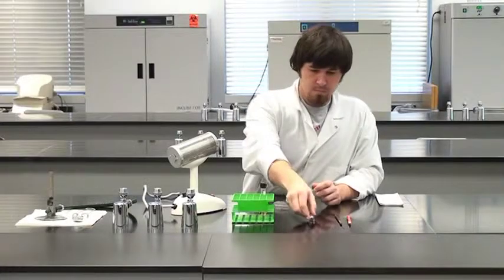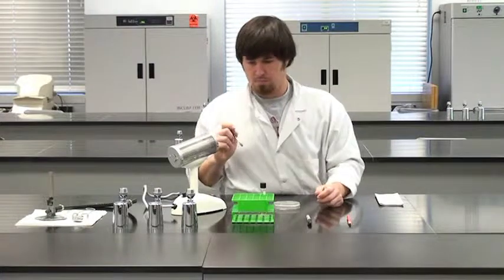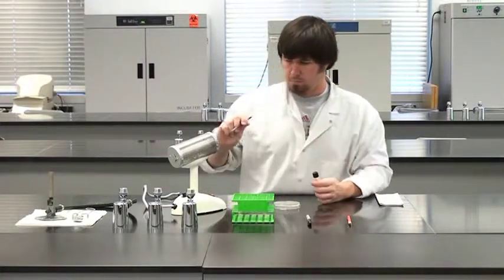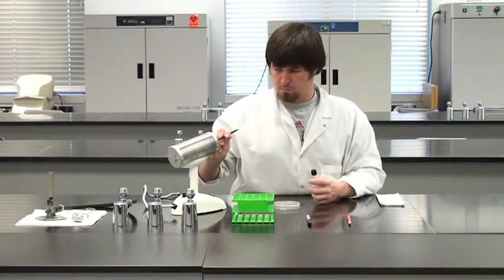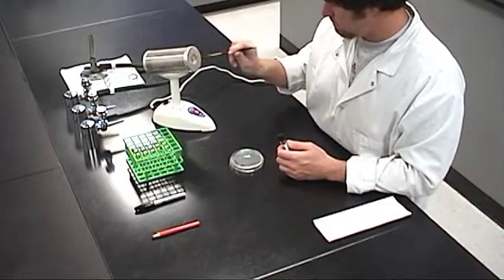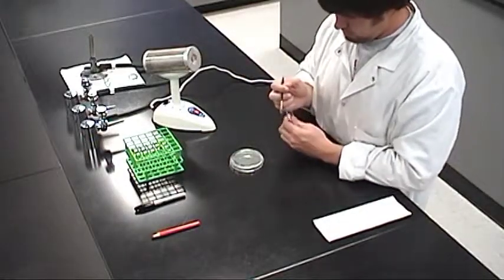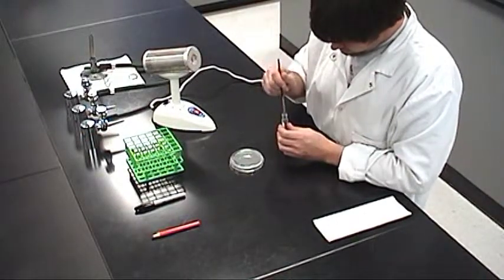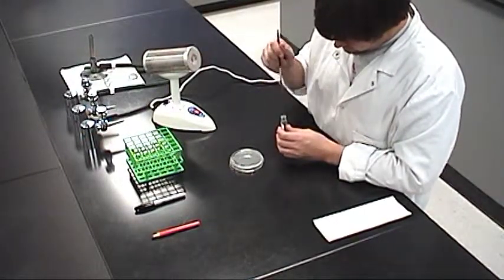Next, inoculate the streak plate using an inoculating loop. Flame the loop for at least 5 seconds to sterilize it. Then extract a single loop full of culture from the culture tube.